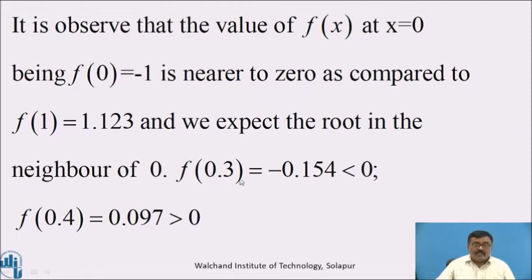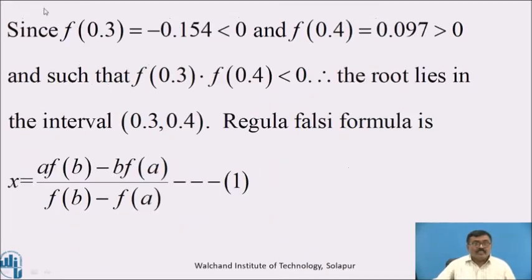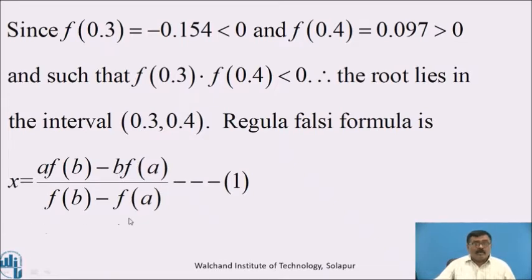That is, f(0.3) = −0.154, which is less than 0, and f(0.4) = 0.097, which is greater than 0. Since f(0.3) = −0.154 is less than 0 and f(0.4) = 0.097 is greater than 0, therefore the root lies in the interval [0.3, 0.4]. The Regula Falsi formula is: x = [a·f(b) − b·f(a)] / [f(b) − f(a)], call it equation 1.